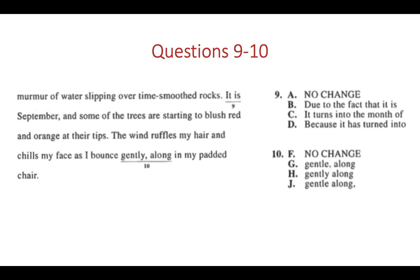Question 10: 'The wind ruffles my hair and chills my face as I bounce gently along in my padded chair.' You don't need a comma before a prepositional phrase. 'Along' is a preposition, and if you have a prepositional phrase at the end of your sentence, you don't need a comma before it. So F, G, and the other options are wrong. The correct answer is H — no comma at all.